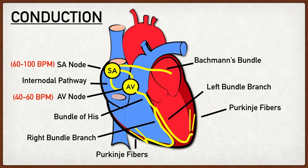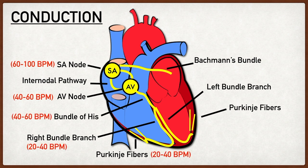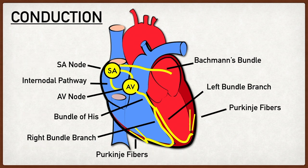Similar to the SA node and AV node, the bundle of His, right and left bundle branches, and Purkinje fibers also contain pacemaker cells that can generate their own action potentials. However, these pacemaker cells generate action potentials at an even slower rate. If there were no SA node or AV node, this portion of the conduction system would lead to the heart beating approximately 20 to 40 times per minute.